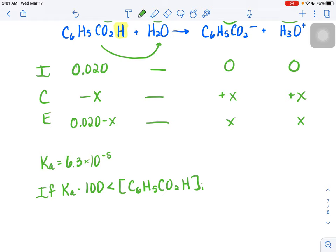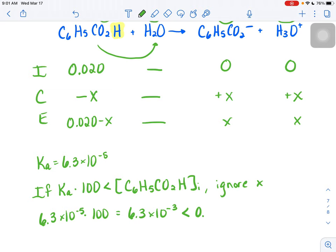If that's true then you can ignore x. So let's check this: if we do 6.3 times 10 to the negative fifth multiply that by 100, that's 6.3 times 10 to the negative third. That number is indeed smaller than 0.020, our initial concentration of our benzoic acid.